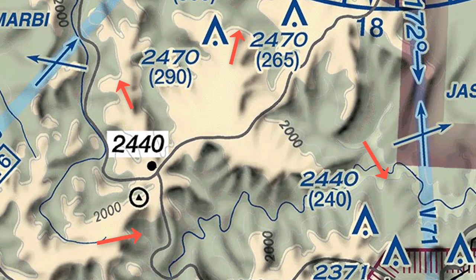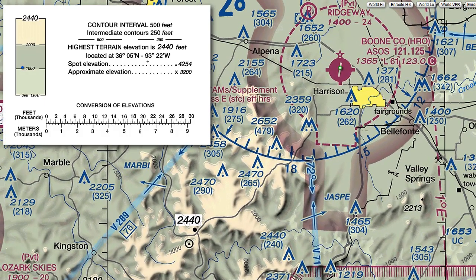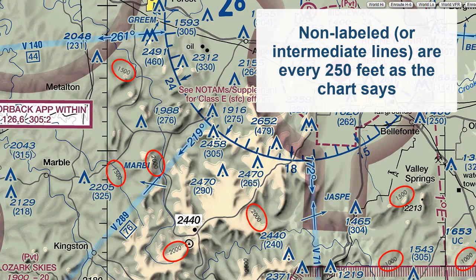First, let's start with contour lines, which are used to depict elevation on charts in mean sea level. The terrain intervals can vary from 100 to 250 to every 500 feet, and we can see that information given on this sectional chart. Here's an example on the sectional chart where the labeled lines are every 500 feet.